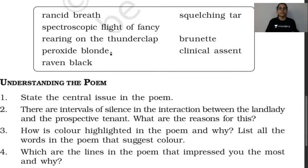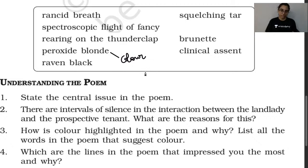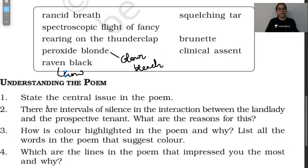Some vocabulary: 'Peroxide blonde' and 'raven black' are used for hair colors. Raven is a species of crow, and raven black refers to a very deep black color. 'Rancid' means acidic or having a bad smell.